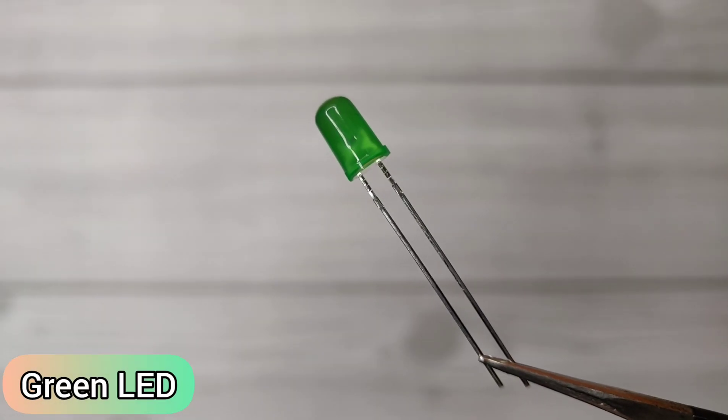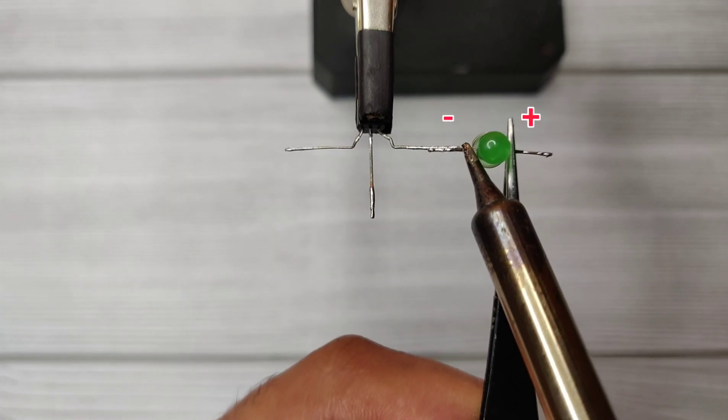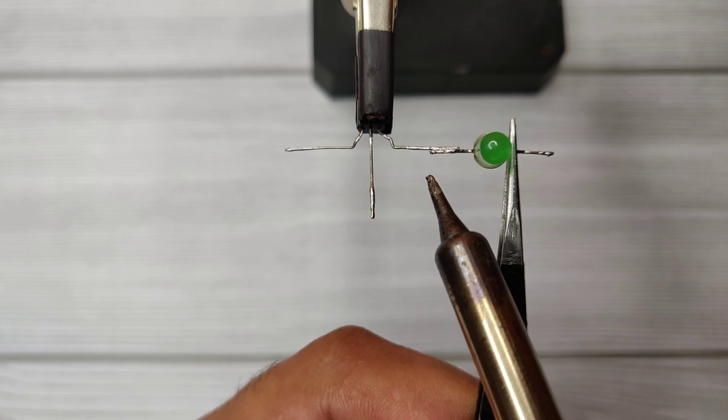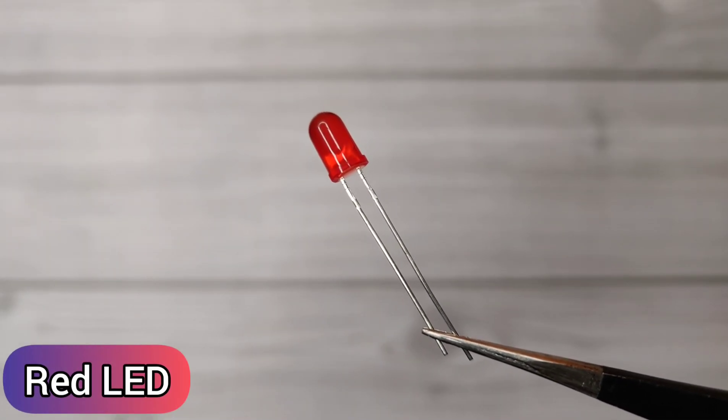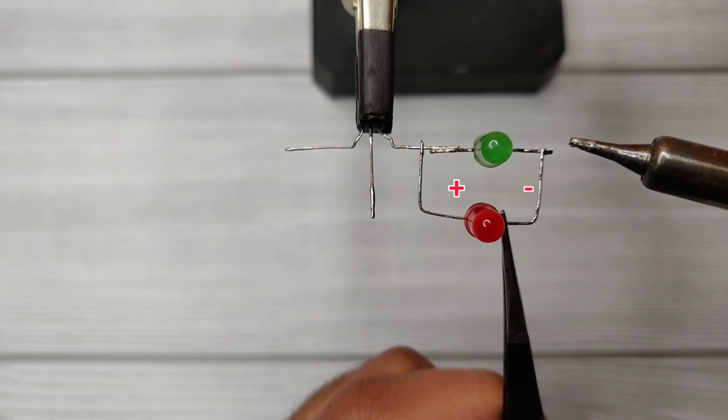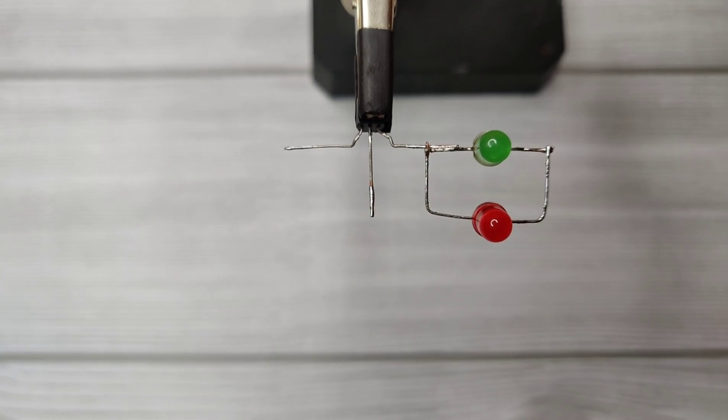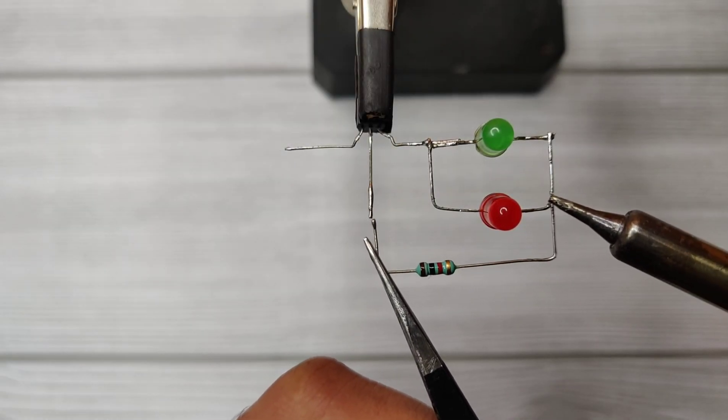Take a green LED and solder the LED negative with pin 3 of the shunt regulator. Take a red LED and solder it in reverse polarity on the green LED.